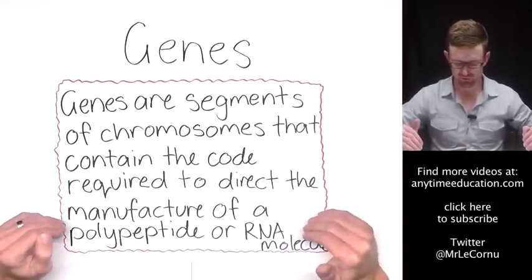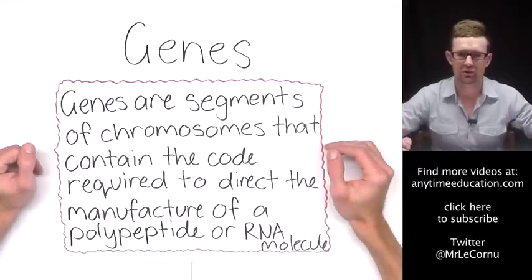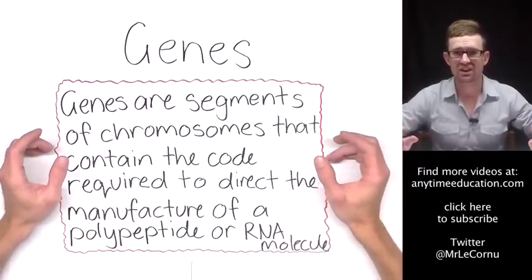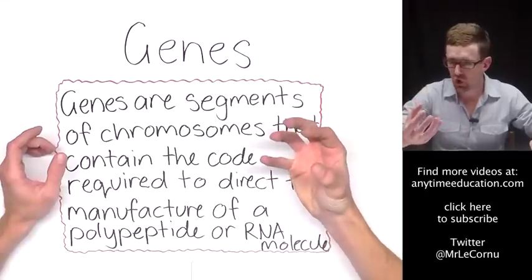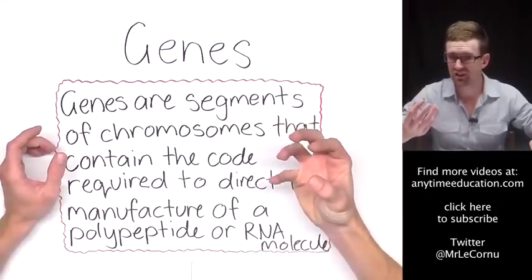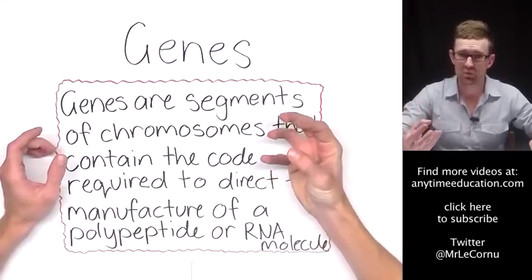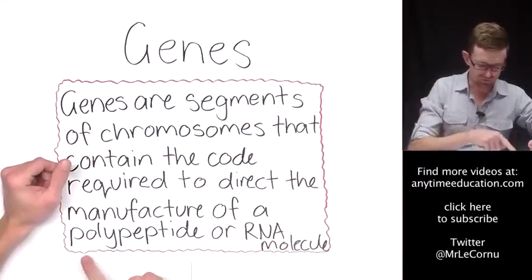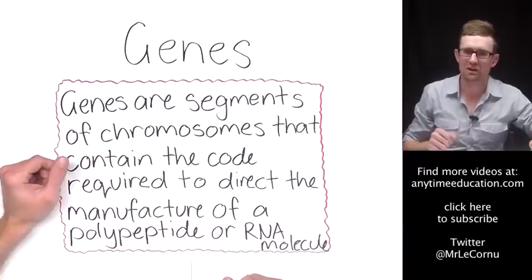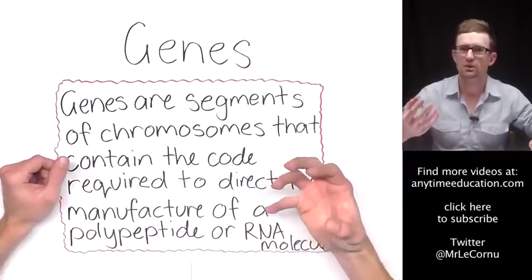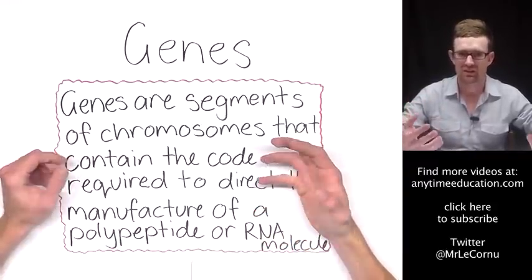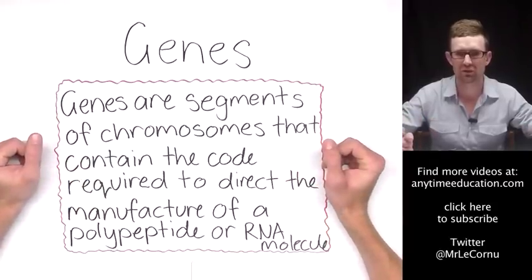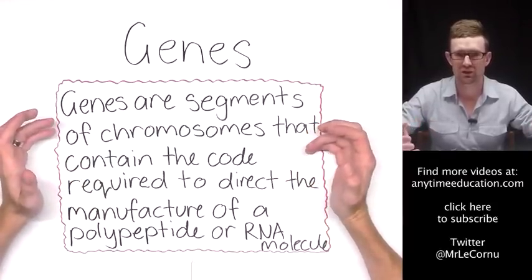Put very simply, that means that genes have the information or the code and the instructions that we need telling a cell how to make polypeptides and RNA molecules. We're going to focus on polypeptides because when we're talking about polypeptides we're talking about proteins. We know how important proteins are and that's where genes play their pivotal part - in the production of proteins.